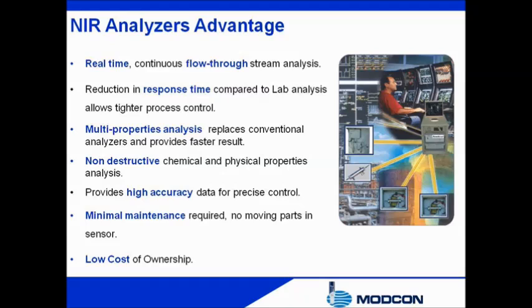NIR process analyzers perform real-time online multi-stream and multi-property analysis. Material from the process stream flows continuously through the measuring probe. The analyzer performs instantaneous multiple-property analysis with high accuracy. The direct benefit is that one NIR analyzer can replace a large number of conventional analyzers. Another important advantage of the NIR analyzer is the absence of wearing mechanical parts, which drastically reduces the cost of maintenance and omits the need to keep a stock of spare parts, as is required for discrete analyzers.